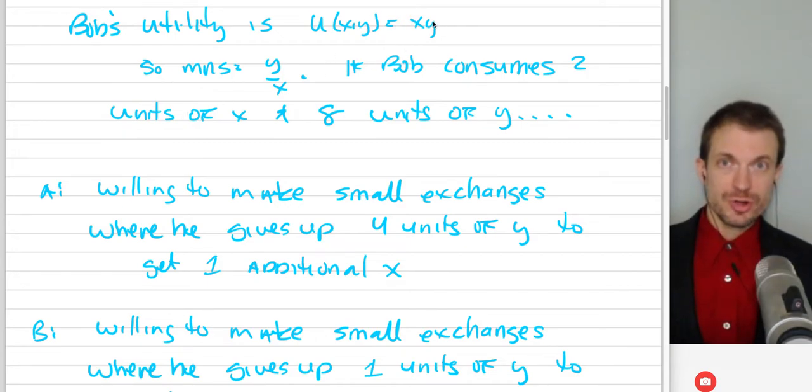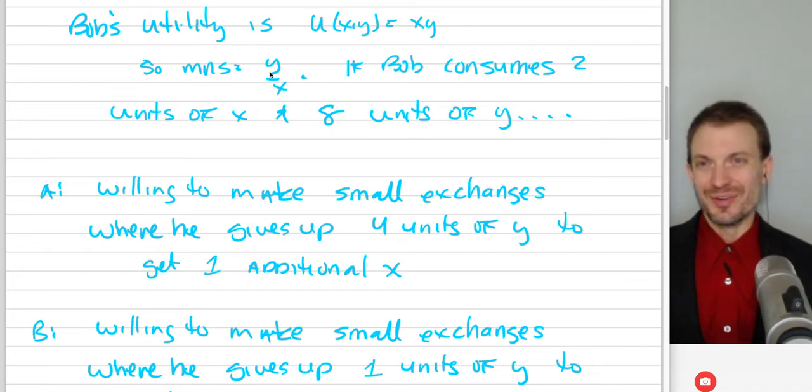The marginal rate of substitution corresponding to this preference structure is just going to be Y over X. You can go and write this out and solve for that. The easiest way would be to take the log transform, the natural log, monotone transformation of this. It would be natural log X plus natural log Y. Take the partials, so you'll have MUX will be 1 over X, MUY will be 1 over Y. So, you'll take 1 over X divided by 1 over Y, which is 1 over X times Y over 1, and you'll get Y over X.